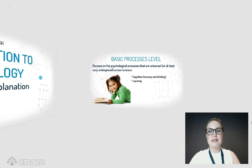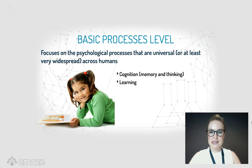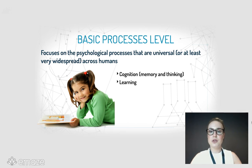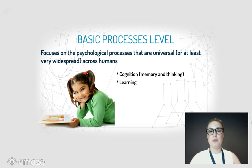The next level is the basic processes level, which focuses on psychological processes that are really common and universal across humans. We look at two main areas here: cognition, which involves memory and thinking, and learning. These processes occur across all humans regardless of where they're from.